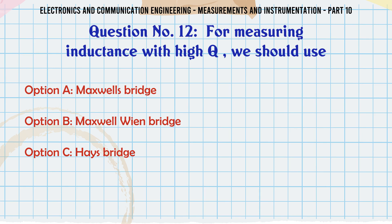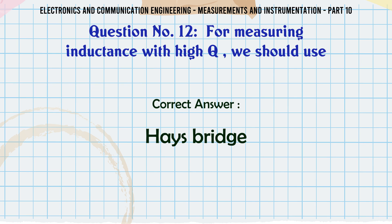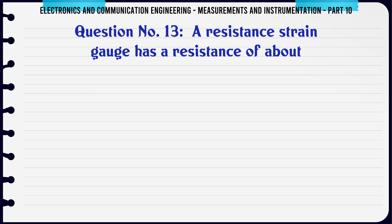For measuring inductance with high Q we should use: A) Maxwell's bridge, B) Maxwell Wien bridge, C) Hay's bridge, D) either A or B. The correct answer is Maxwell's bridge.